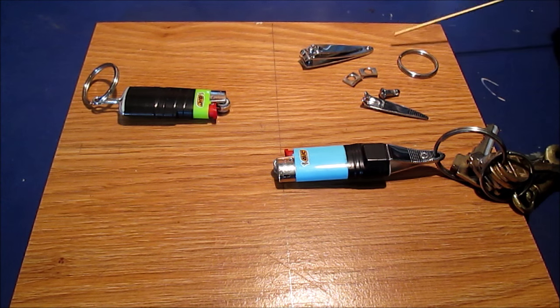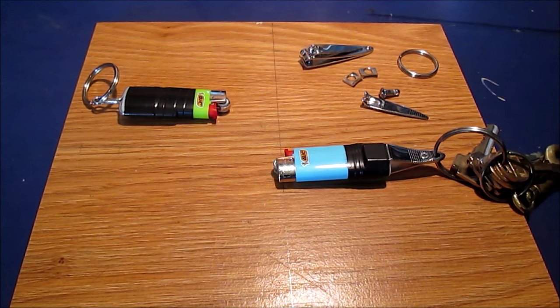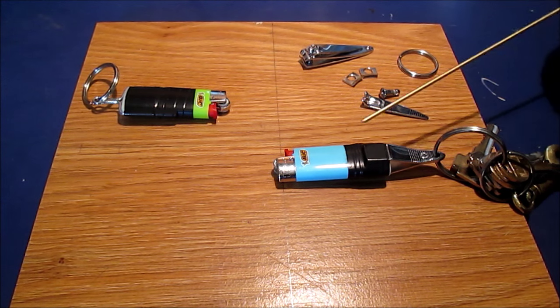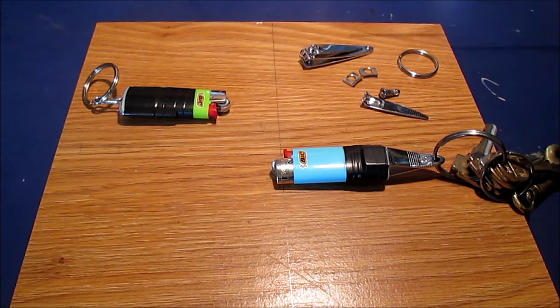A while back I saw on Amazon, and I'm sure there were YouTube videos too, of a little keychain holder to put your mini-Bic on your keychain. You slide it in there and it kind of clamps in there. I thought, well, can I make something?